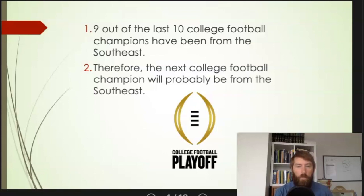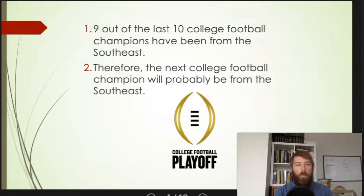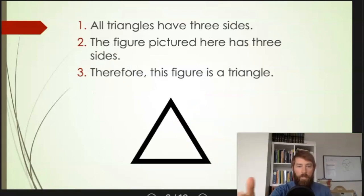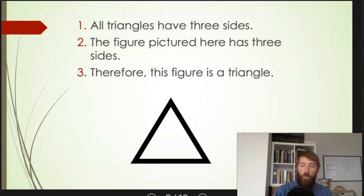Nobody knows for sure what's going to happen in the future when it comes to college football. But even if that premise is true, it seems like it gives us some support — some historical precedence — for people from the southeast taking college football seriously, so they usually win. This gives us probable support for the conclusion. By contrast, the triangle argument gives us logically conclusive support for the conclusion.